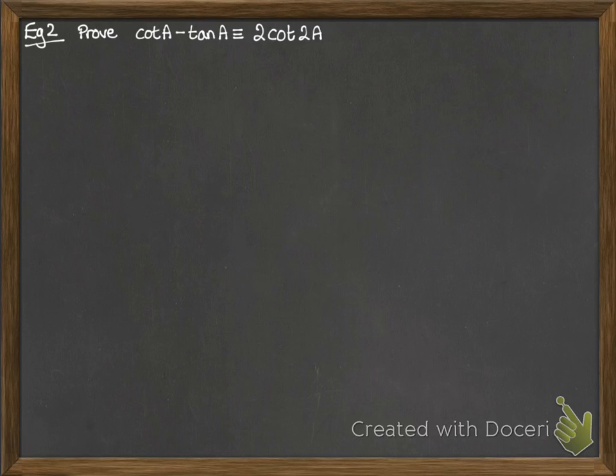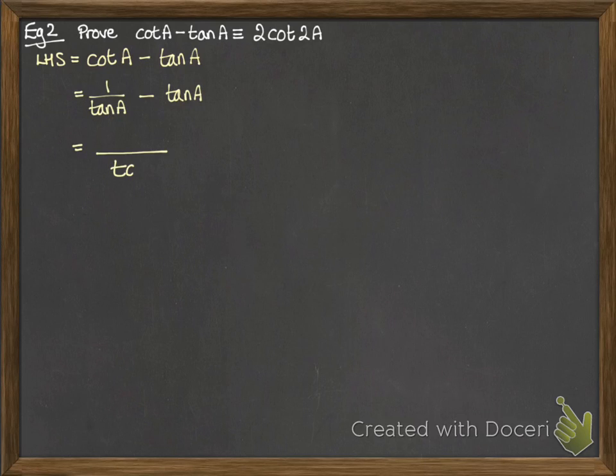Next we have a proving question. These ones you need to be quite particular about the way you set them out. So we're proving that cot(a) minus tan(a) is identically equal to 2cot(2a). So I'm going to start with the left hand side, and see what we can do with that. So cot of course is 1 over tan. If we put that all over a common denominator of tan(a), then we will have 1 minus tan²(a) on the top.